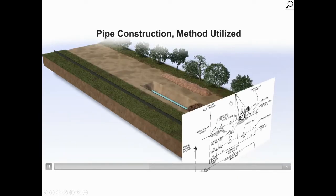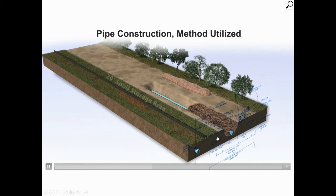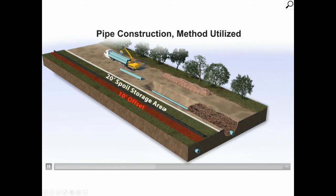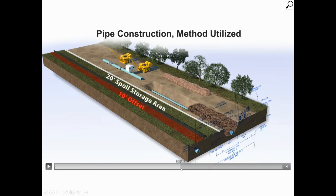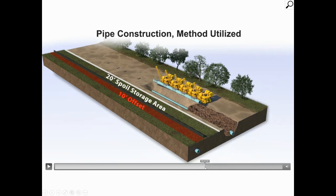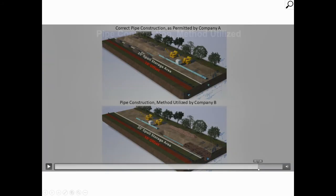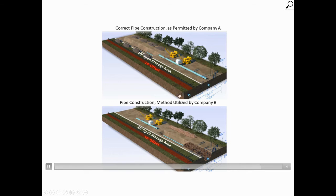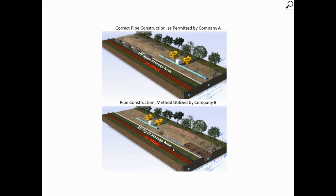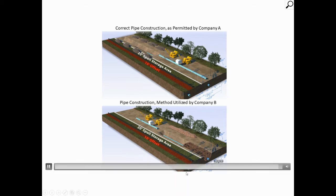Here you also have the plan and the method that was utilized. One of the things that was really important was the use — or lack of use — of the spoil area. We thought this would be a nice thing to show, especially comparing the two ways in which the projects were done versus how it was permitted to be done. We added that in at the end of the animation so you could see exactly what the differences were. In one situation, the spoil area was used in a different manner, which actually impeded the efficiency of the project — it slowed it down and made it more expensive. These were points that were really important to the attorneys to illustrate.